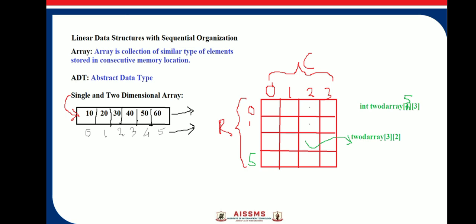arrays. An array is defined as a collection of similar data type elements stored in consecutive memory locations.